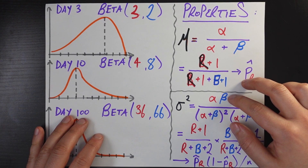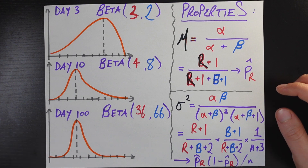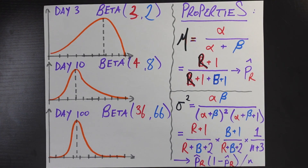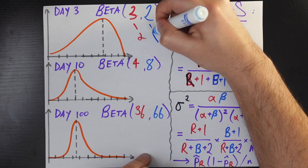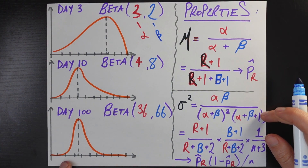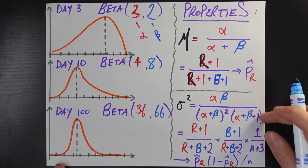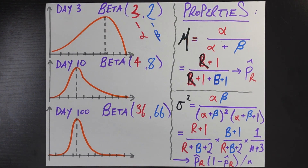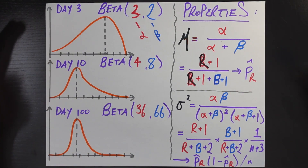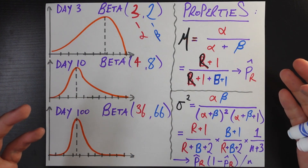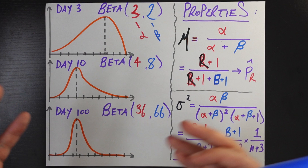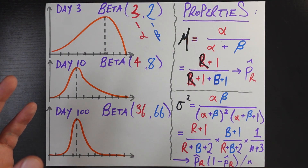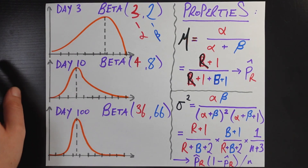The beta distribution is characterized by two parameters: alpha and beta. What do alpha and beta mean in the context of this problem? Alpha is related to the number of successes in your problem, and beta is related to the number of failures. These are very generic terms that let you apply this to lots of different use cases. In this case, we're considering every time the professor wears red shoes as a success, because that's the probability we're trying to model.